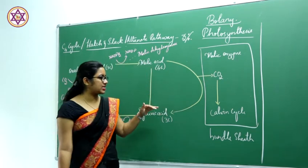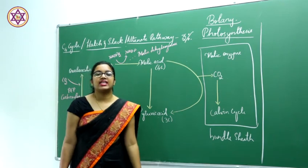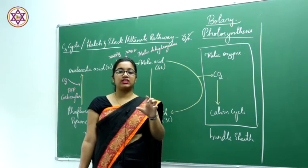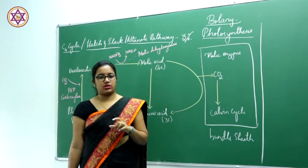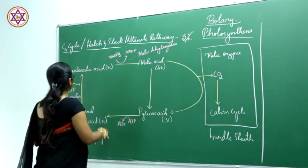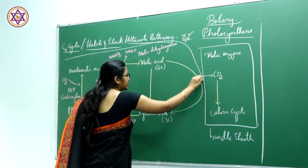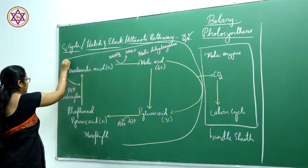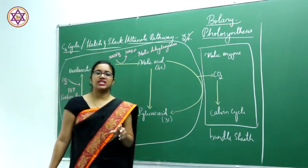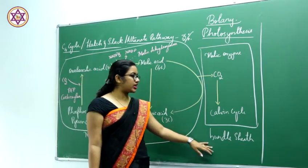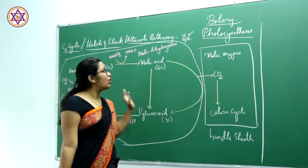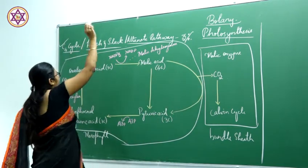In the bundle sheath cells, the grana is absent — there are no thylakoid stacks. That is one key feature. Whereas the mesophyll cells are normal, consisting of the usual chloroplast. The mesophyll cells also have intercellular spaces. Both bundle sheath cells and mesophyll cells are interconnected for the C4 cycle wherein carbon dioxide is fixed.